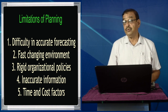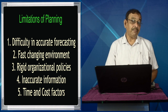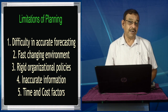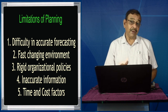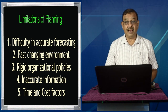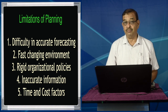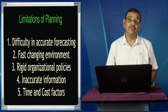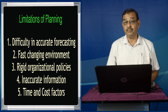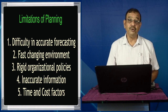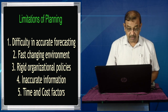Many times we do not have accurate information. Planning is based on planning premises, as stated in the first part of the video. Premises are drawn based on accurate information, but many times we do not have accurate information. So when we do not have accurate information, our premises are going to be wrong, and when premises are wrong, planning will also be wrong.